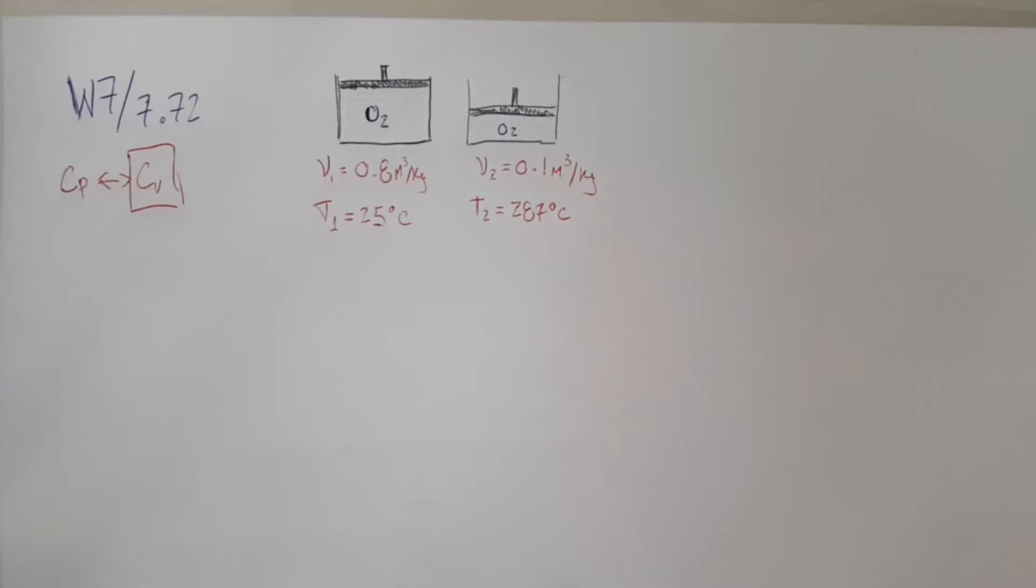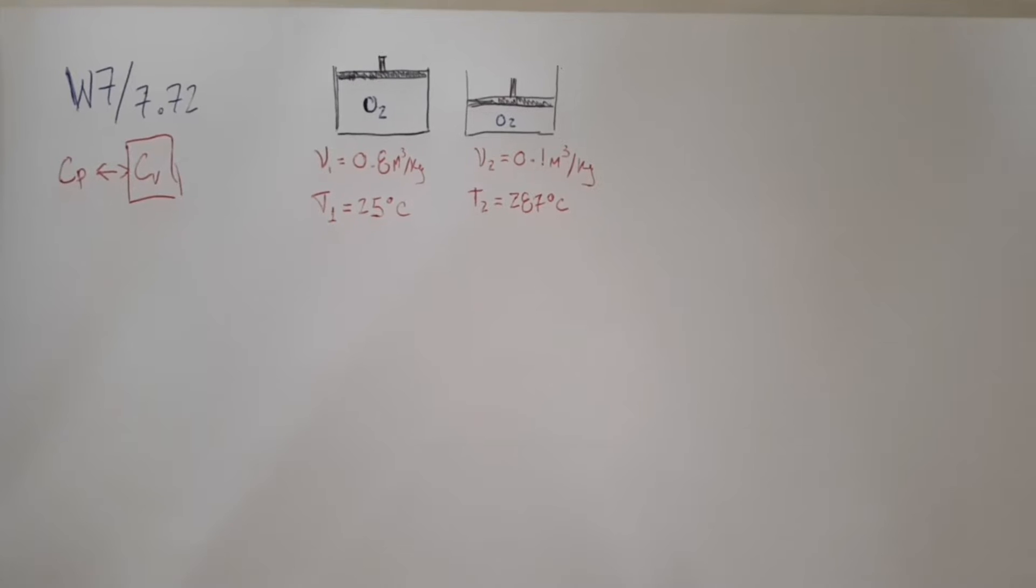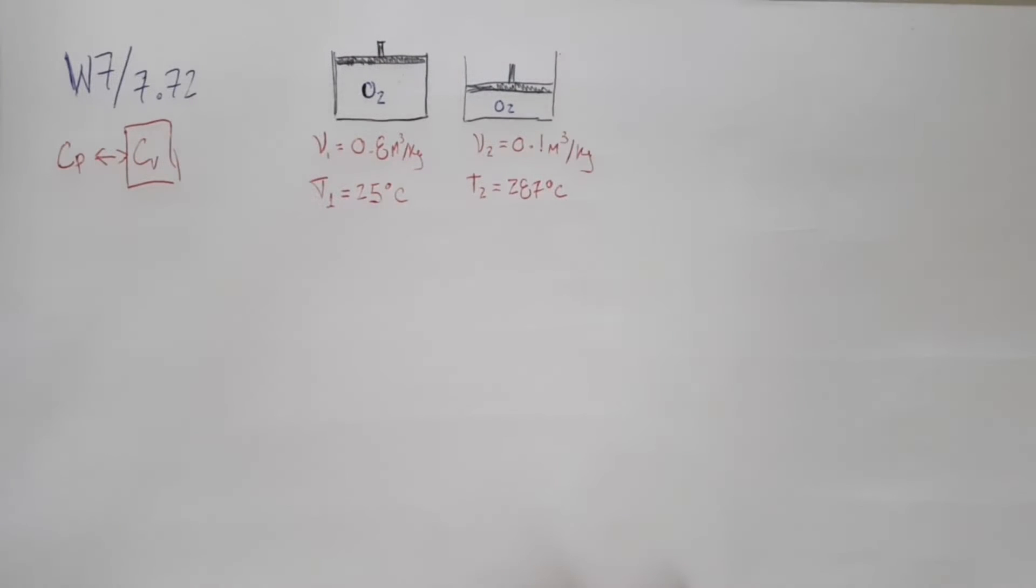Let's have a look at problem 7.72 of week 7, in which we have oxygen gas compressed in a piston-cylinder device, going from 0.8 m³/kg and 25°C to 0.1 m³/kg and 287°C.